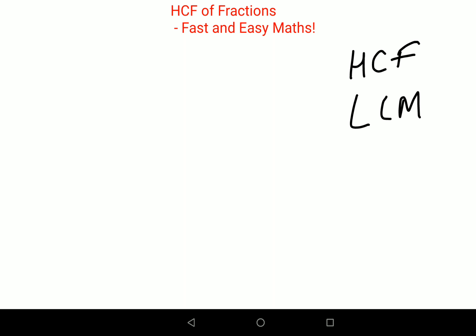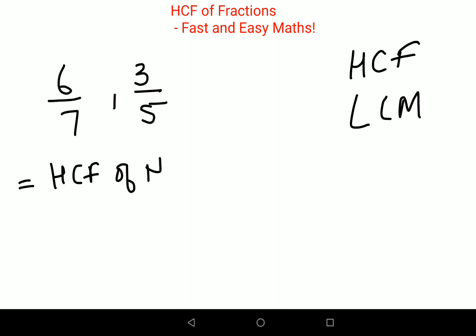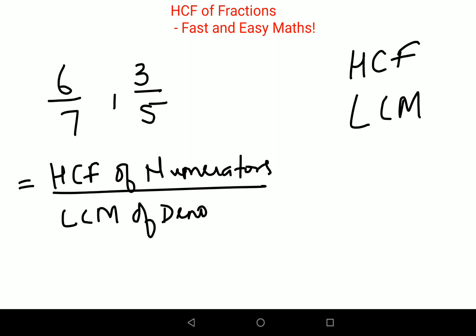I'm going to start with a smaller fraction and then we'll go to the bigger ones. When finding the HCF of fractions, the answer will always be in the form of a fraction. It is always recommended to write down the denominator as well, even if it is just 1. The formula is: HCF of the numerators over LCM of the denominators.